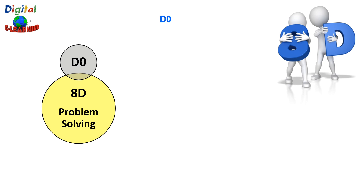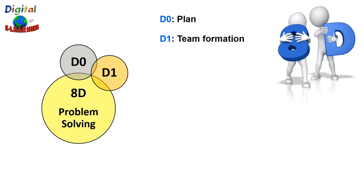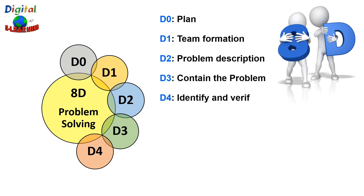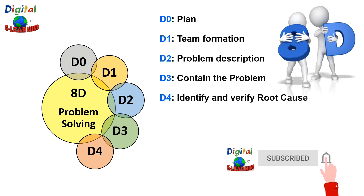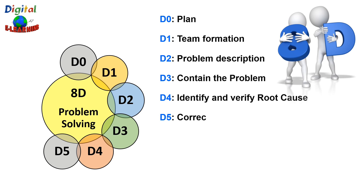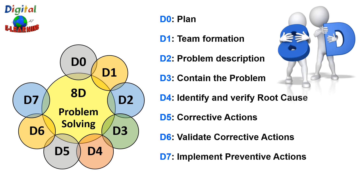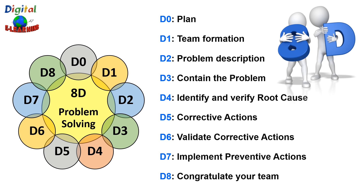These eight steps are: D0 Plan, D1 Team Formation, D2 Problem Description, D3 Contain the Problem, D4 Identify and Verify the Root Cause, D5 Corrective Actions, D6 Validate Corrective Actions, D7 Implement Preventive Actions, and finally D8 — congratulate your team.